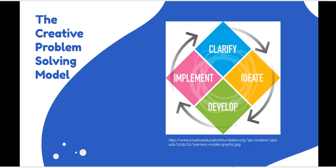The creative problem solving process in particular was outlined by two individuals in the 1950s, and there's a foundation they created that continues to this day to promote creative thinking and trainings. The creative problem solving model is pretty straightforward. There are four steps: clarify, ideate, develop, and implement.